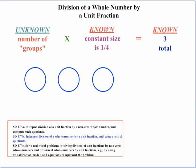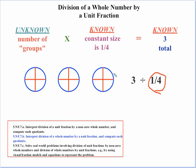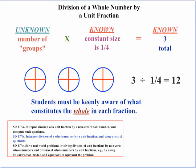Each one of those circles has to be divided into four parts. Again, we have to take "number of groups" with a grain of salt. The question being asked really is: how many of these one-fourth pieces do I have in all of this? Students could probably just look at this and say, "There are 12 of them." Students need to be aware of what the whole is — basically, how many of these one-fourth pieces are there in all of this? The solution is 12.